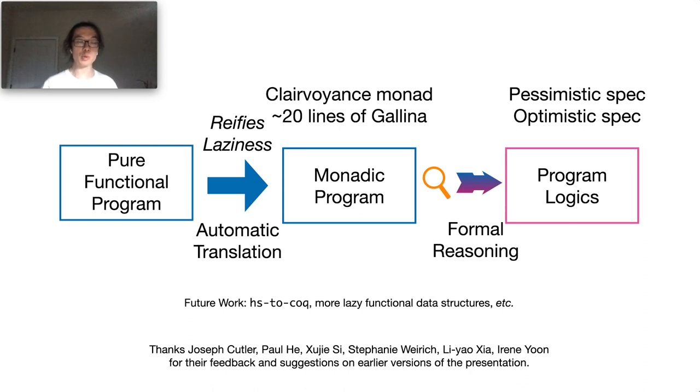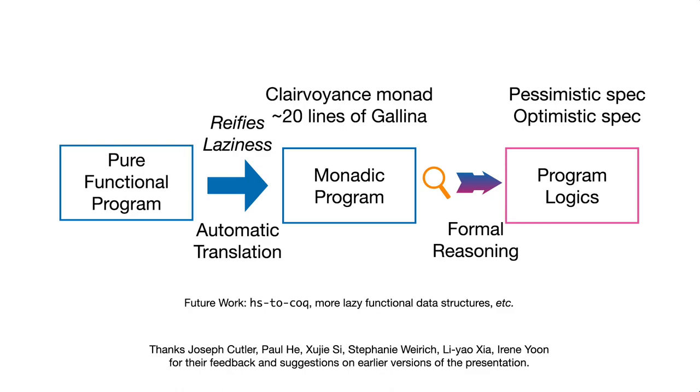These are the key ideas behind our work. In the future, we would like to apply our translation strategy to tools like hs-to-coq, so we can reason about computation cost of lazy functional data structures written in Haskell. And that concludes my talk.